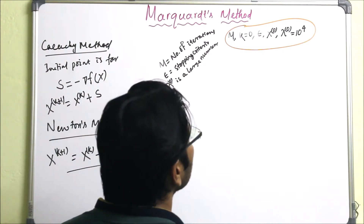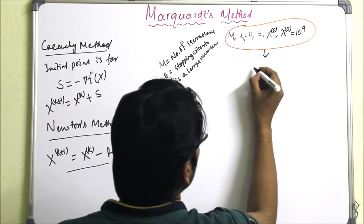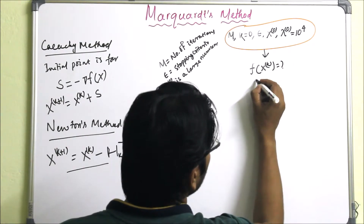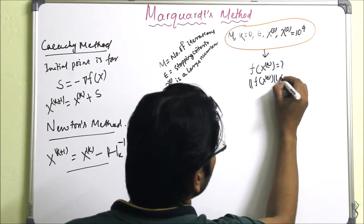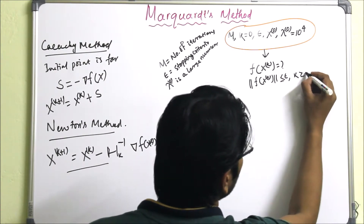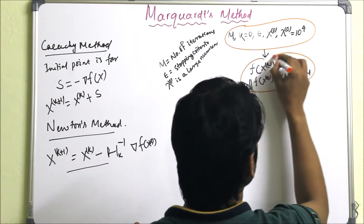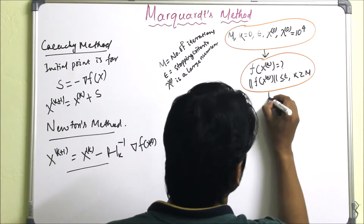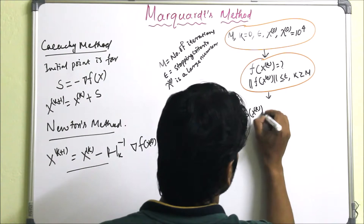The second step is to calculate F(X_K) and find the norm of F(X_K). If the norm is less than or equal to epsilon, or K is greater than or equal to M, we stop the process. This step determines the stopping criteria for the iterations.